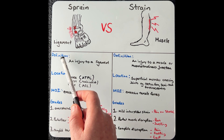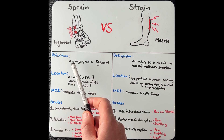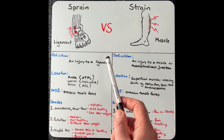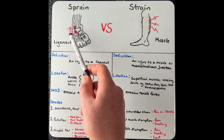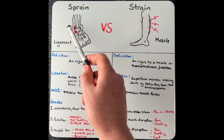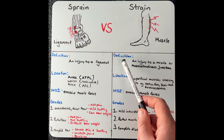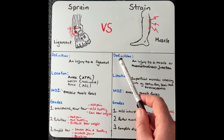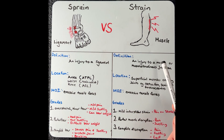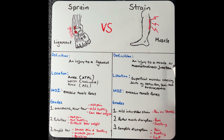Let's start with the definition of a sprain. This is essentially an injury to a ligament, which we can see here in a ligament in the ankle, whilst the definition of a strain is an injury to a muscle or a musculotendinous junction.